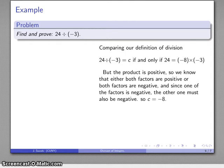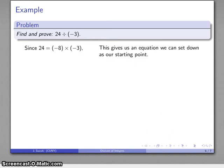Now I have the statement: 24 divided by negative 3 is c if and only if 24 equals negative 8 times negative 3. Well, this is true—negative 8 times negative 3 is in fact 24, so 24 divided by negative 3 is negative 8. That allows us to fill in the details and complete our proof. I have to start with the thing I know to be true: 24 is negative 8 times negative 3.